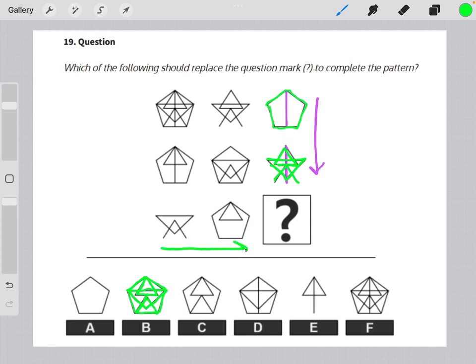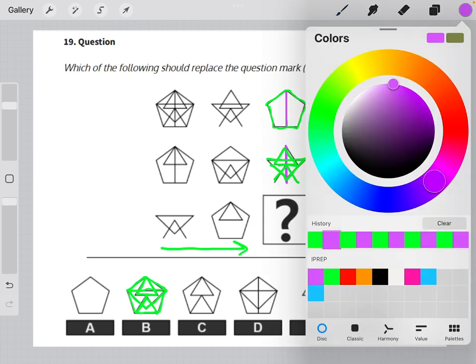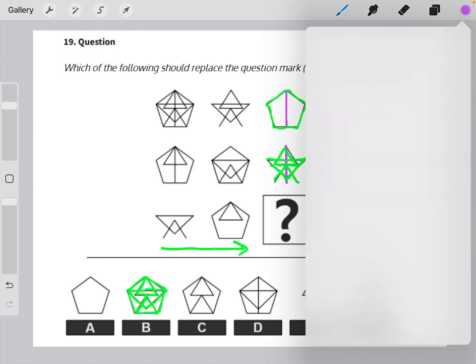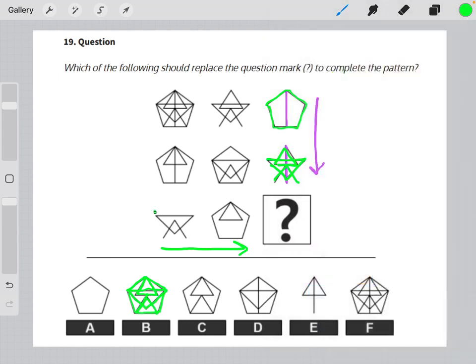If we were to combine these two, let's see if they have anything in common. They do not. So they would fully combine these two shapes: three triangles and a pentagon, which would also give us an answer choice of B.